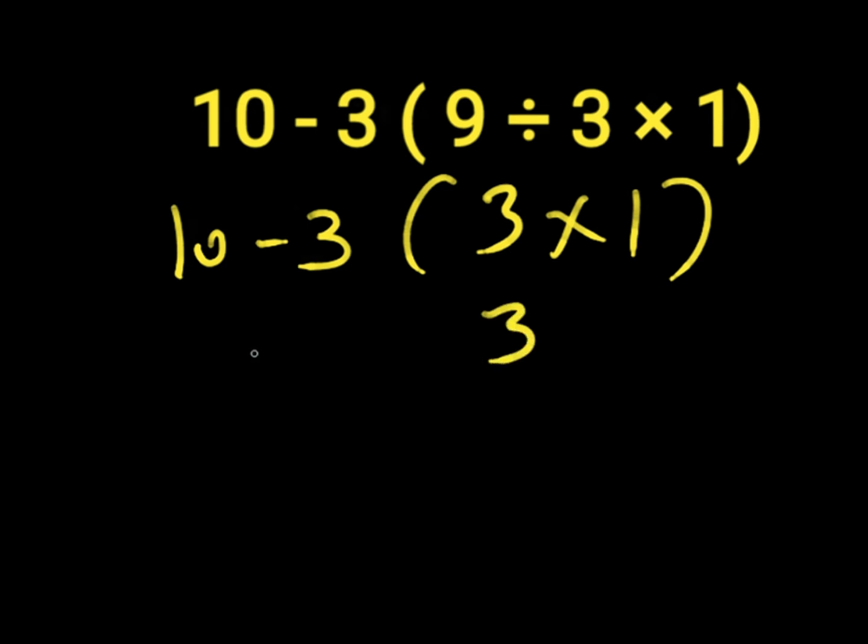3 times 1 will give us 3. Then we have 10 minus 3 times 3. So 10 minus 3 will give us 7. Then we have 7 times 3. 7 times 3 will give us 21. So 21 is the right answer to this question.